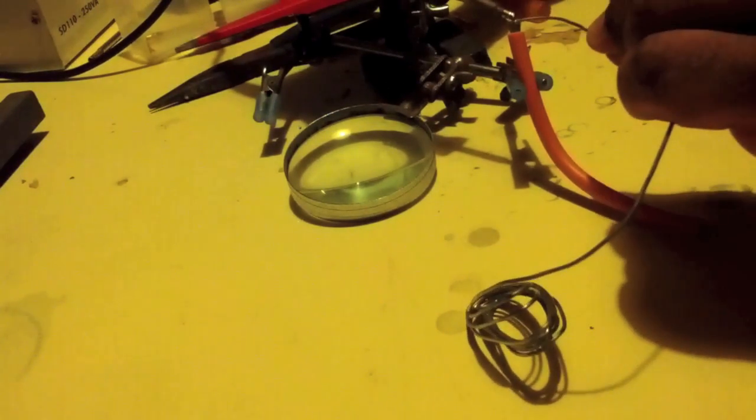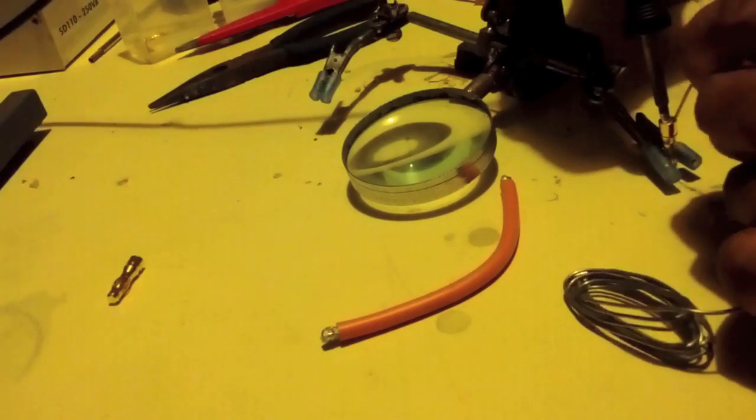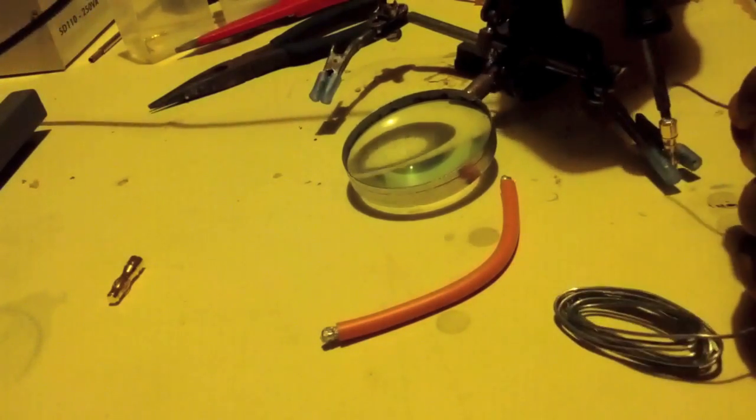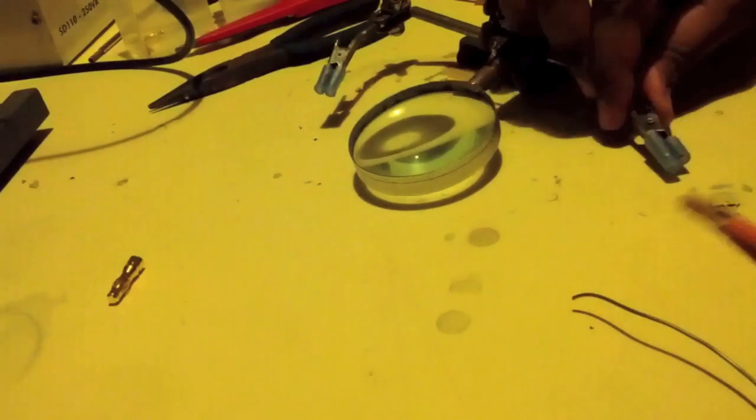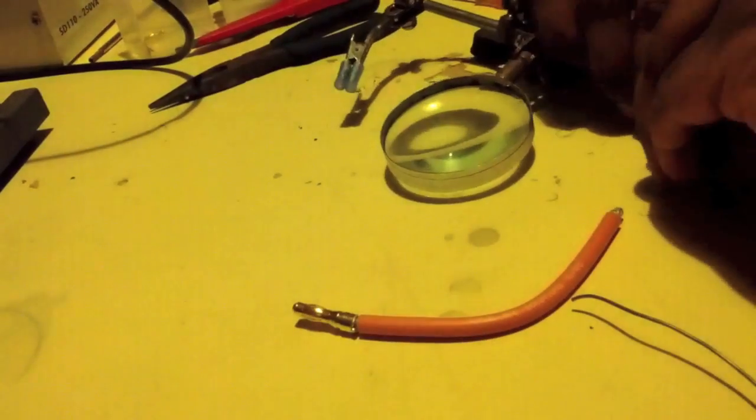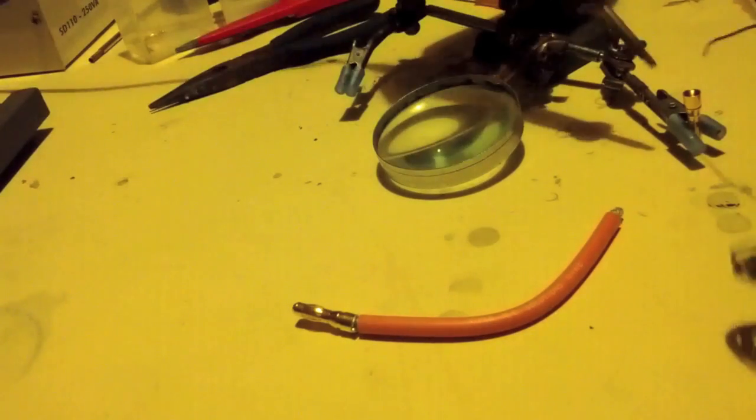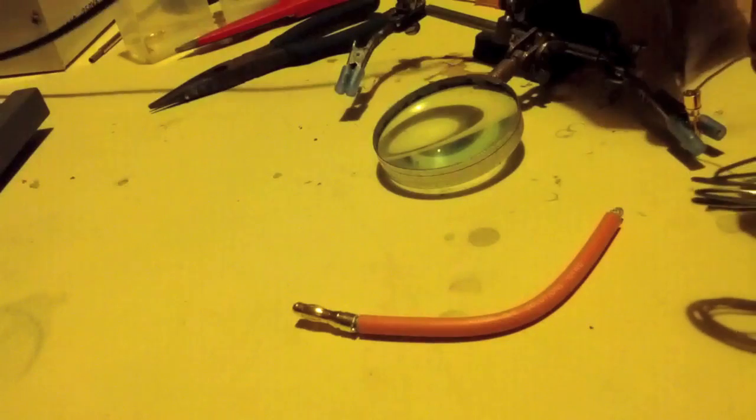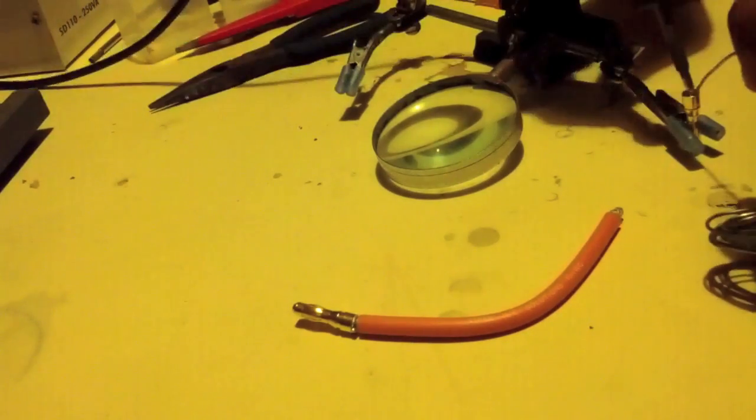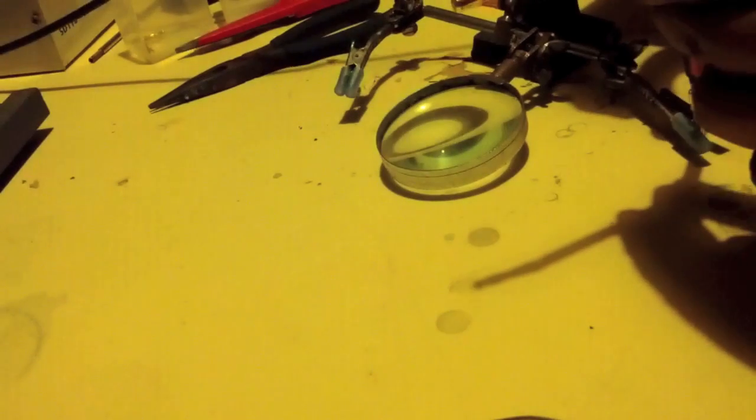Again, the same process. Cut off the end, tin it, fill the socket with solder. It's just a case of repeating the process. You just need to make sure you get your pins right. You use the right pins in the right housing. Keep organized.